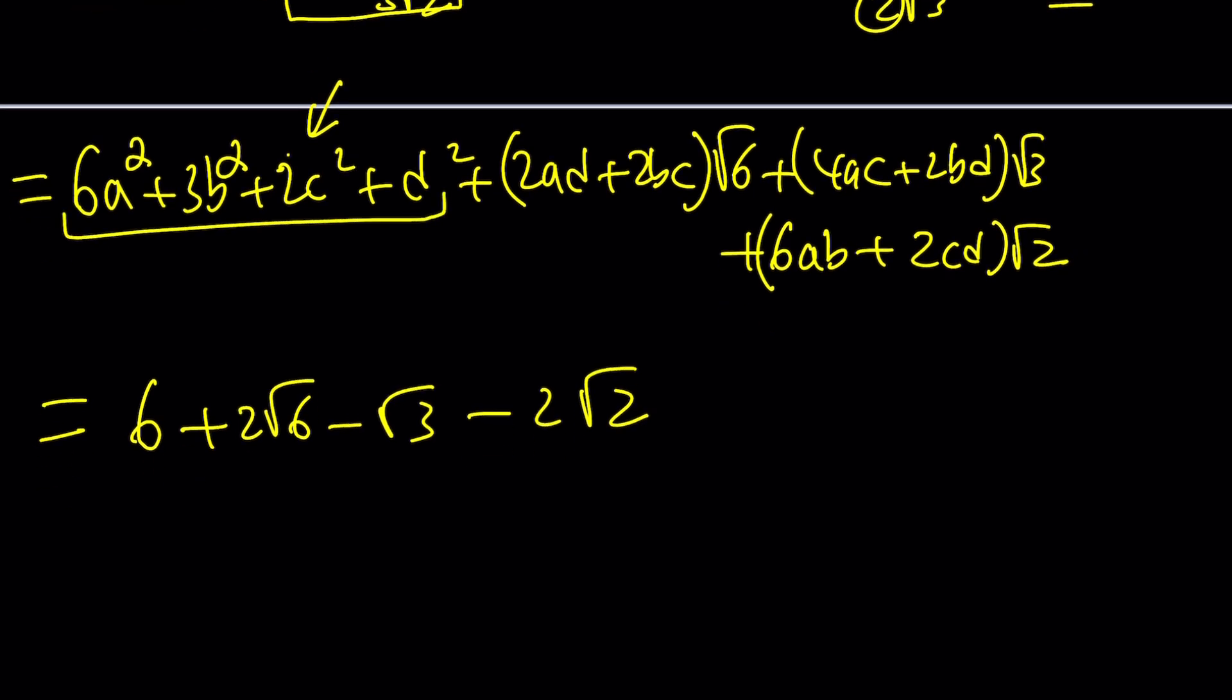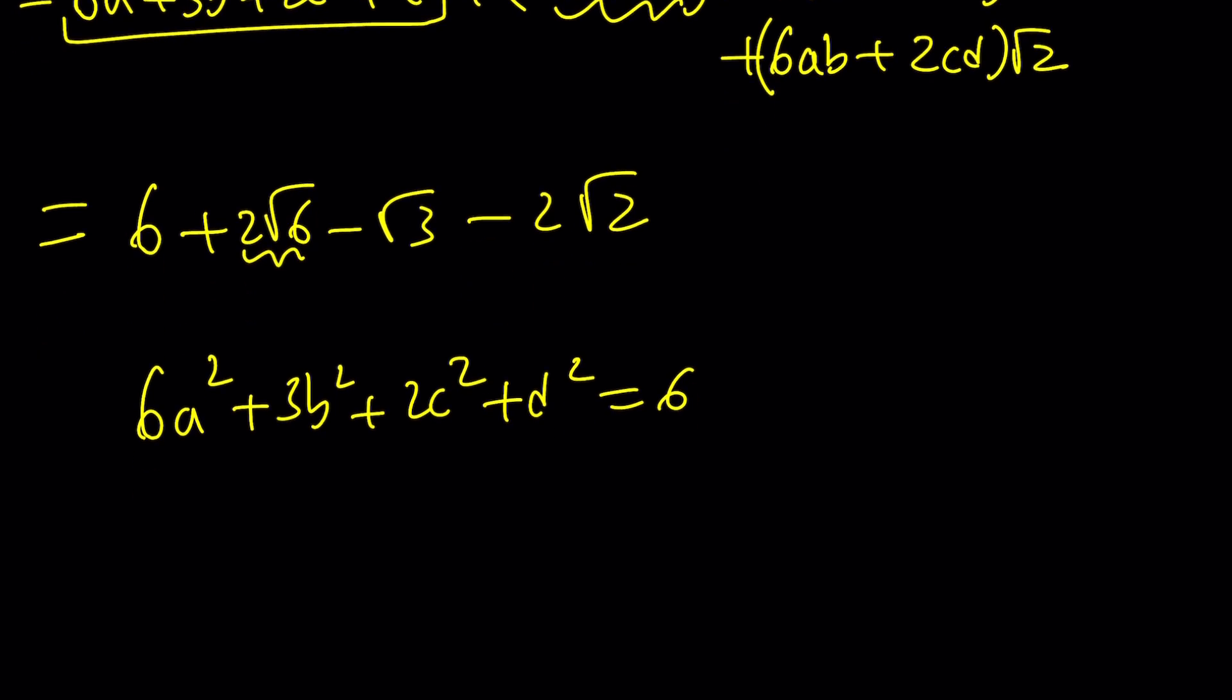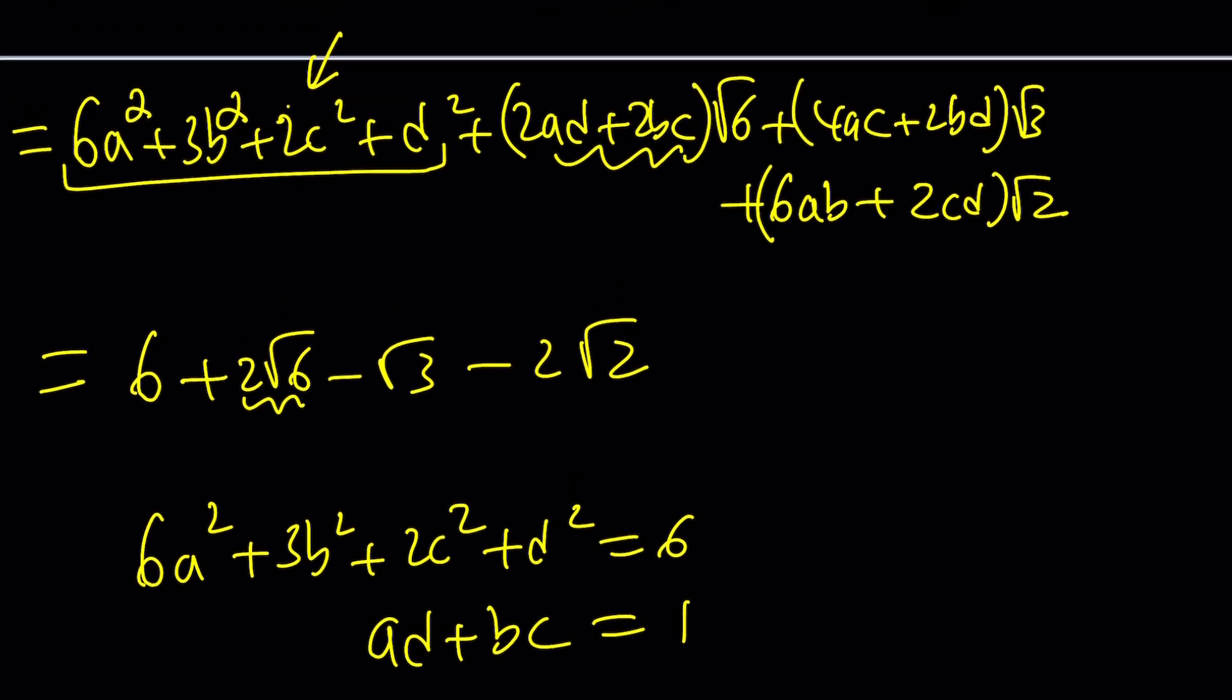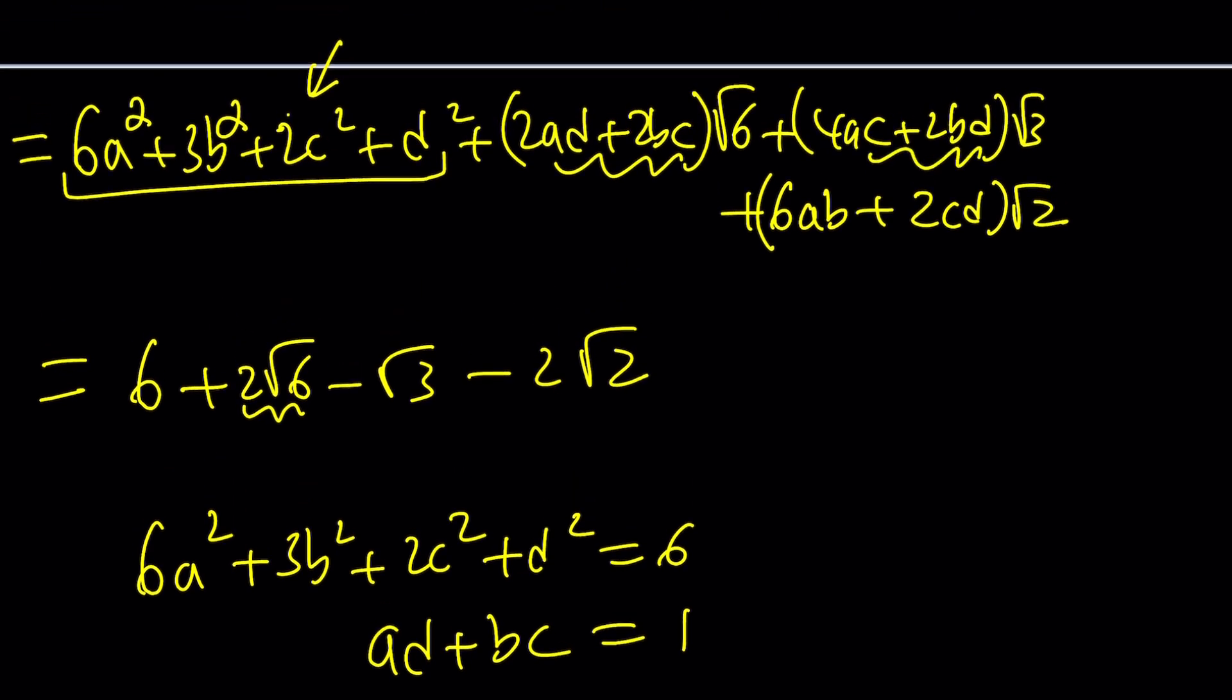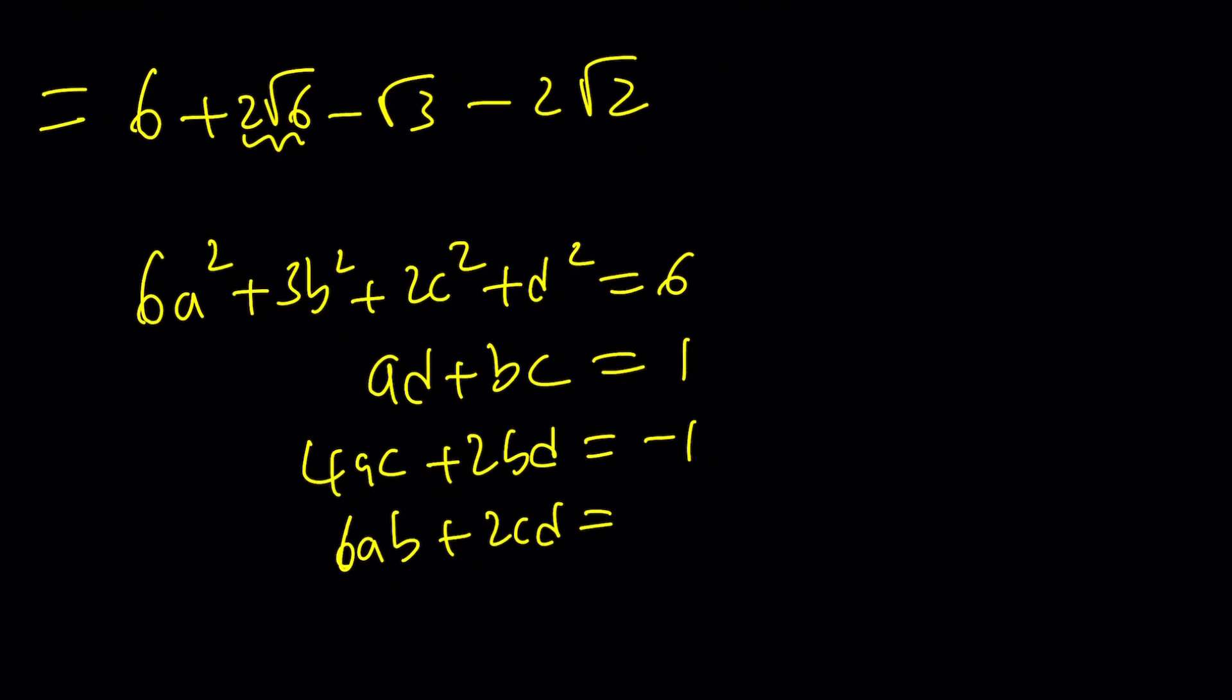So here, this is our rational term. 6a squared plus 3b squared plus 2c squared plus d squared equals 6. The coefficient of root 6 is 2, so if you divide both sides by 2, you get ad plus bc equals 1. The coefficient of root 3 is negative 1, so 4ac plus 2bd equals negative 1. And 6ab plus 2cd, the coefficient of root 2, which is negative 2. We can simplify and write it as 3ab plus cd equals negative 1.